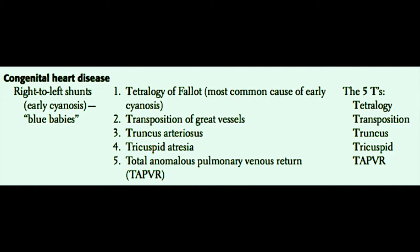First, we'll discuss congenital heart disease. The first set of diseases in this category are the right-to-left shunts. In general, the right-to-left shunt diseases cause blue baby syndrome or early cyanosis. These are babies that come out with cyanotic heart disease. All of these begin with the letter T, so they're very easy to remember.